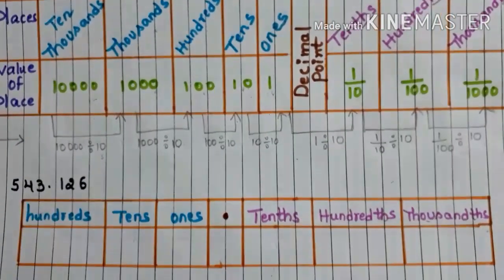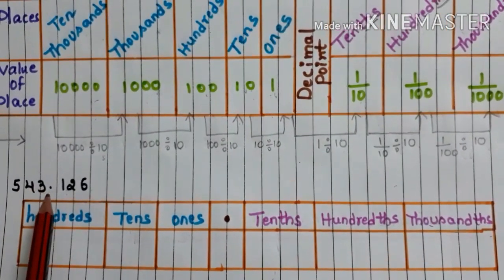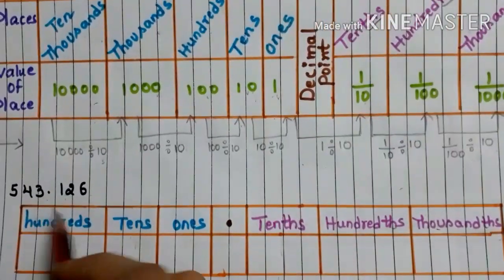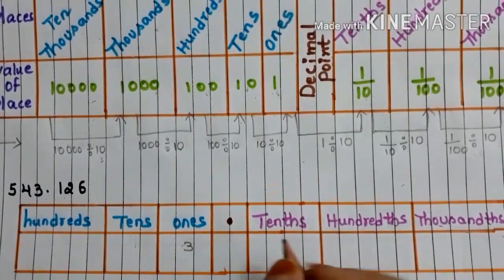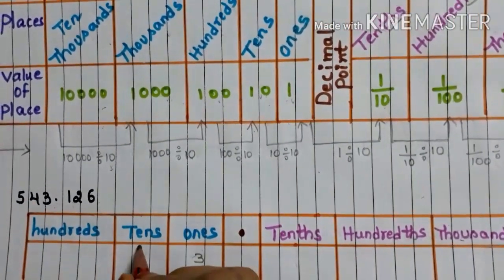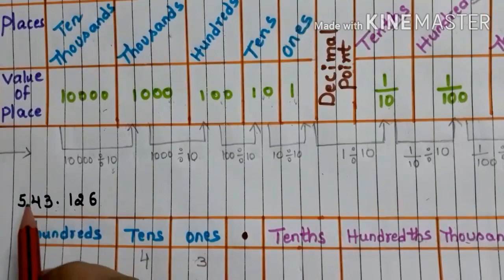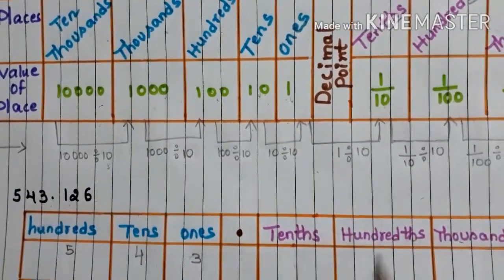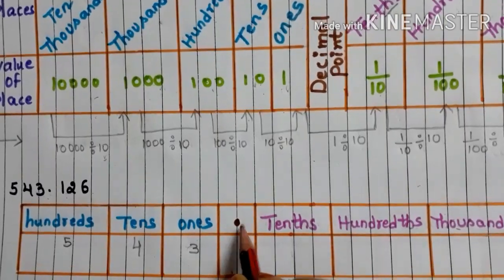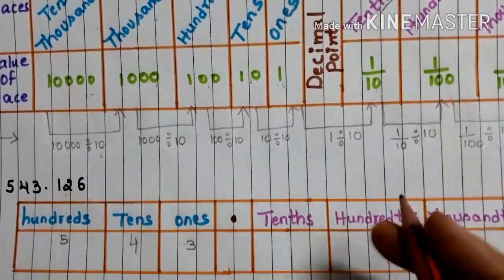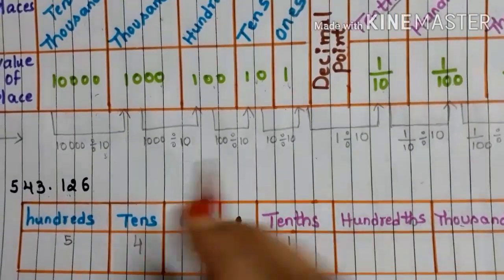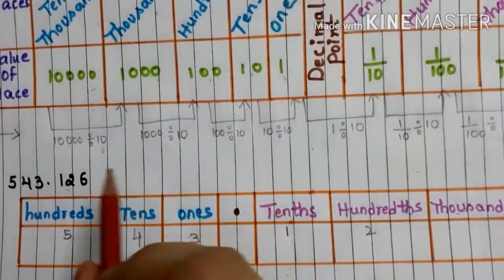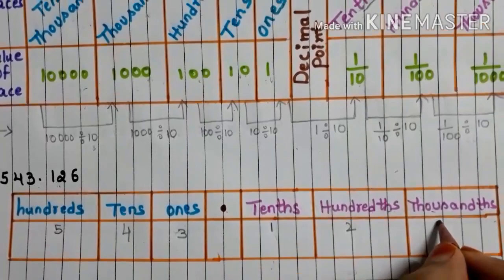Now let us place the decimal number 543.126 in the place value chart. 3 is in the 1's place. 4 is in the 10's place. 5 is in the 100's place. This is the decimal point. 1 is in the tenths place. 2 is in the hundredths place. 6 is in the thousandths place.